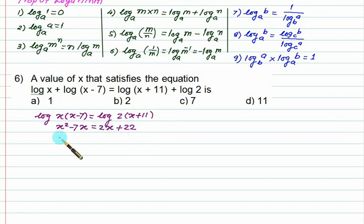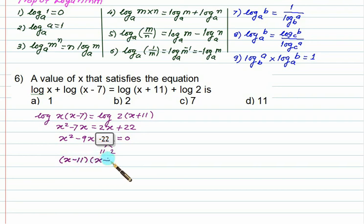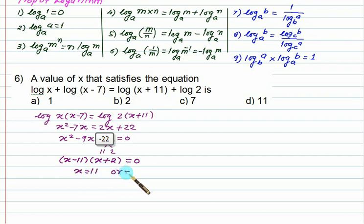So we get x squared minus 9x minus 22 equal to 0. Since 22 can be written as 11 times 2, we factor to get (x minus 11)(x plus 2) equal to 0. So either x equals 11 or x equals minus 2. Since minus 2 is not valid here, we accept choice D: x equals 11.